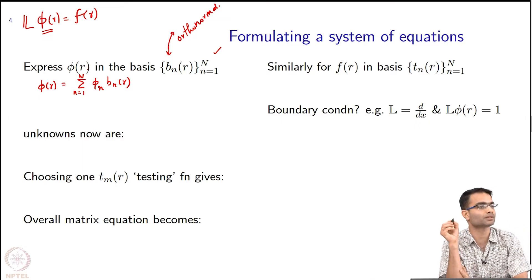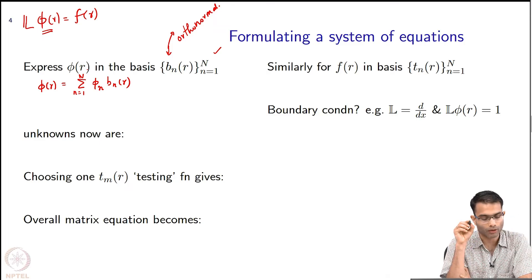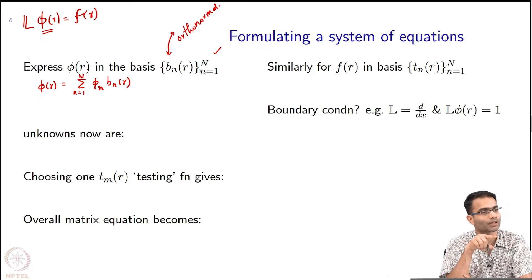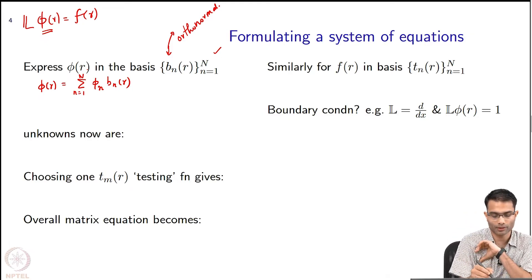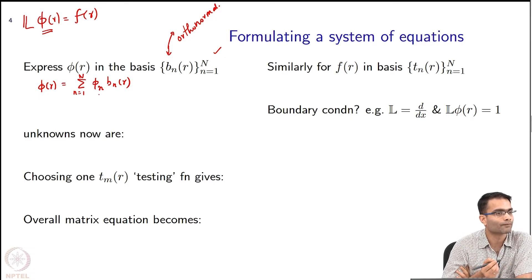Since it is a basis, I should be able to express any function as a linear combination of these basis functions. Now, what is known and what is unknown here? b_n is known; φ_n is not known. So from a function, I have converted to a set of scalars φ_n. To find out φ_n, what should I do on both sides? Take an inner product — with which basis function?